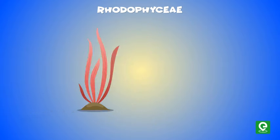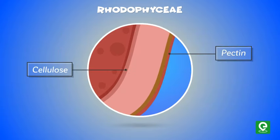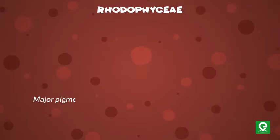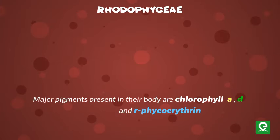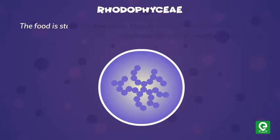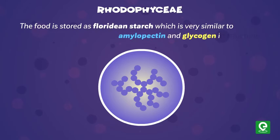Cell walls of red algae are made up of cellulose, pectin, and polysulphate esters. The major pigments present in their body are chlorophyll a, chlorophyll d, and r-phycoerythrin. The food is stored as floridean starch, which is very similar to amylopectin and glycogen in structure.